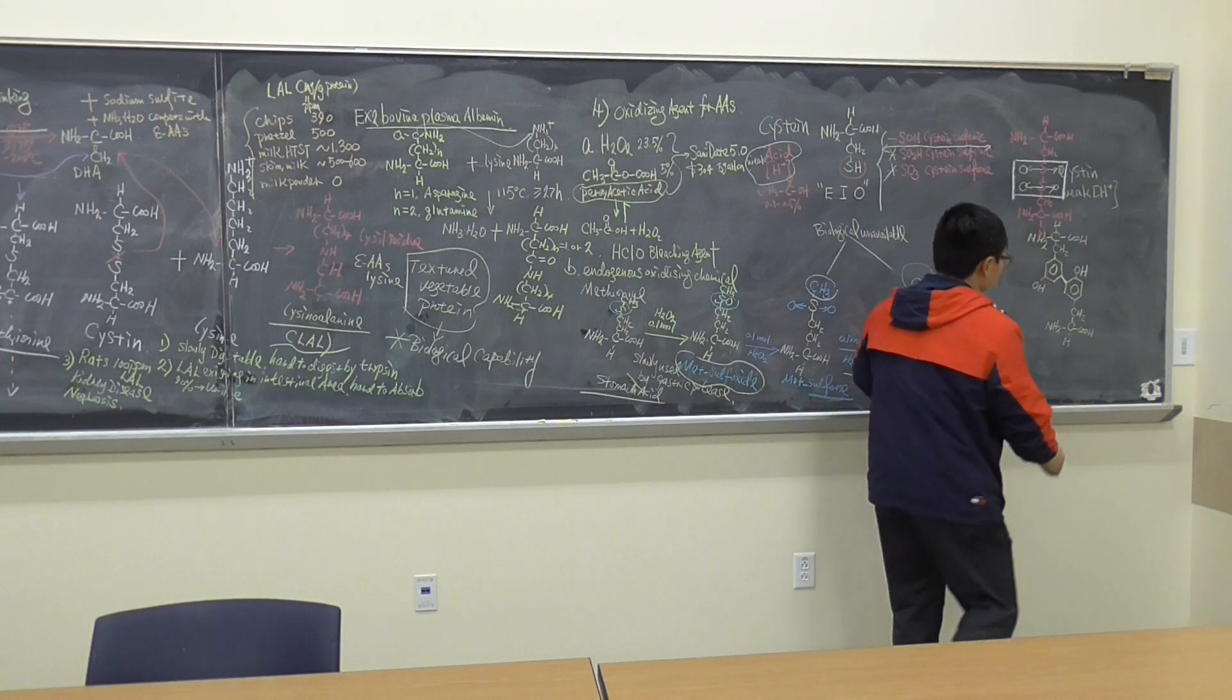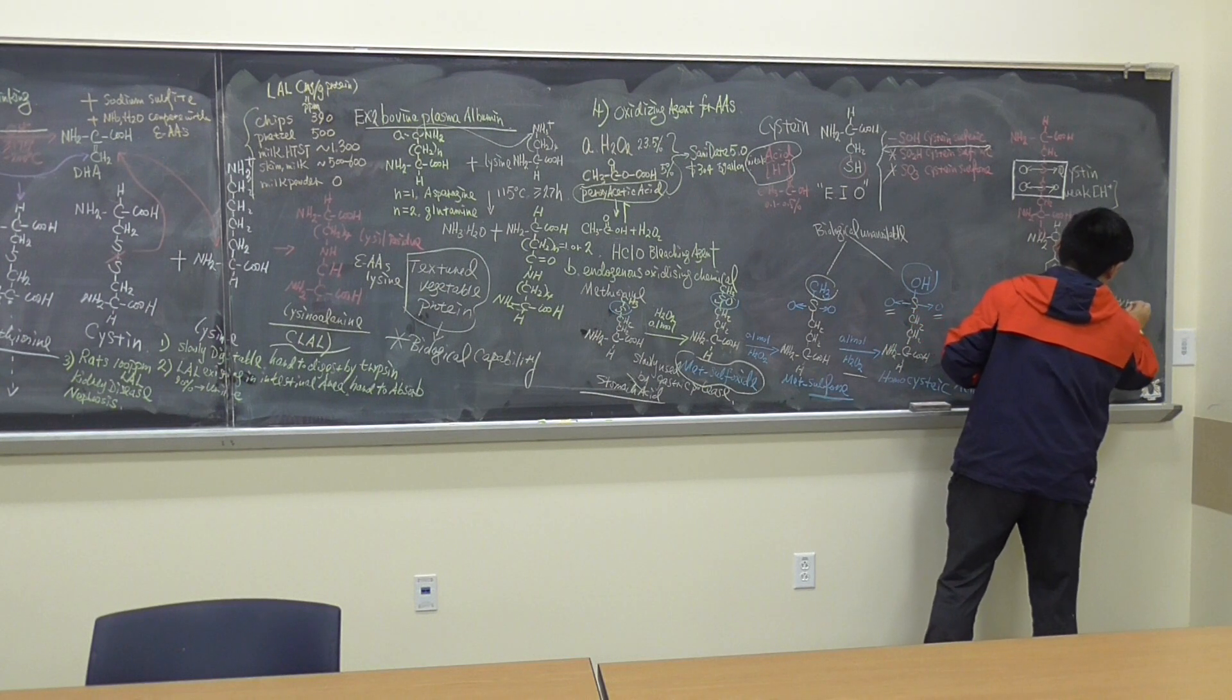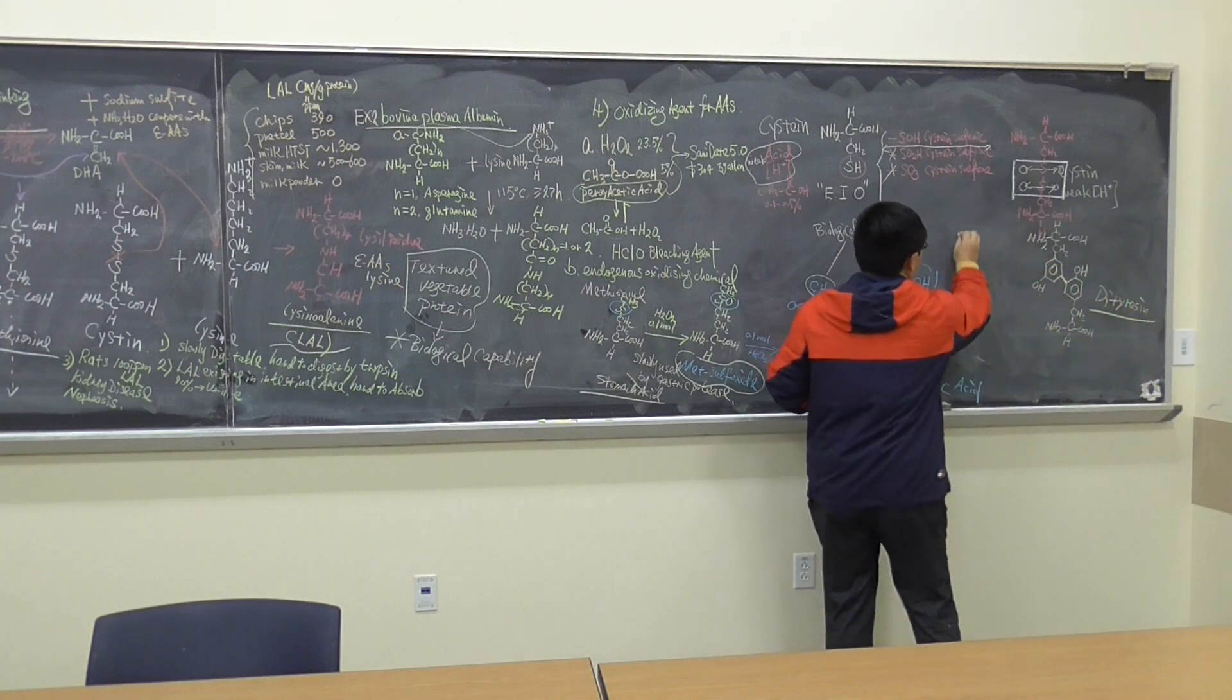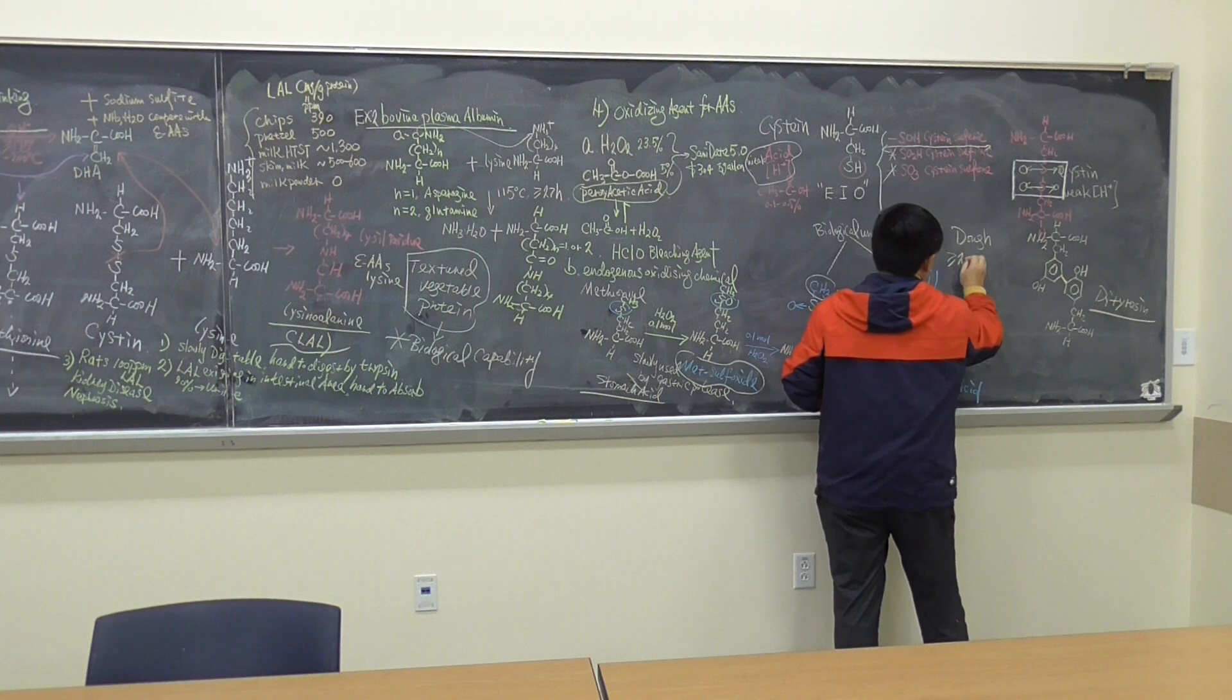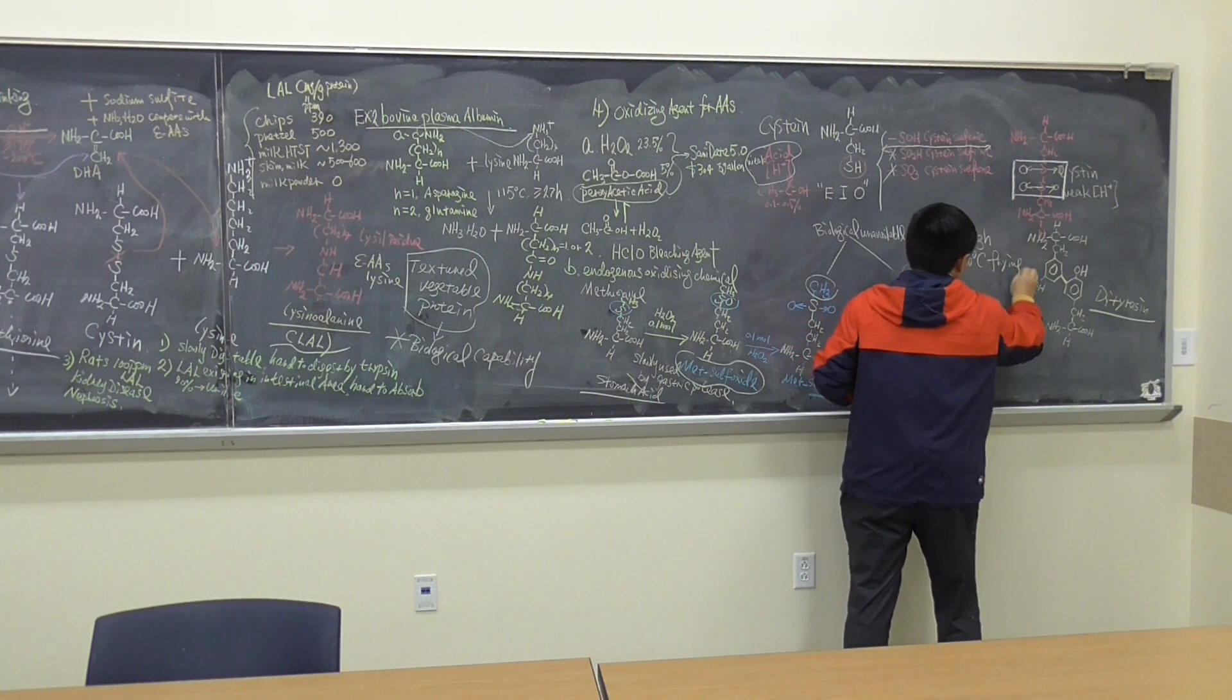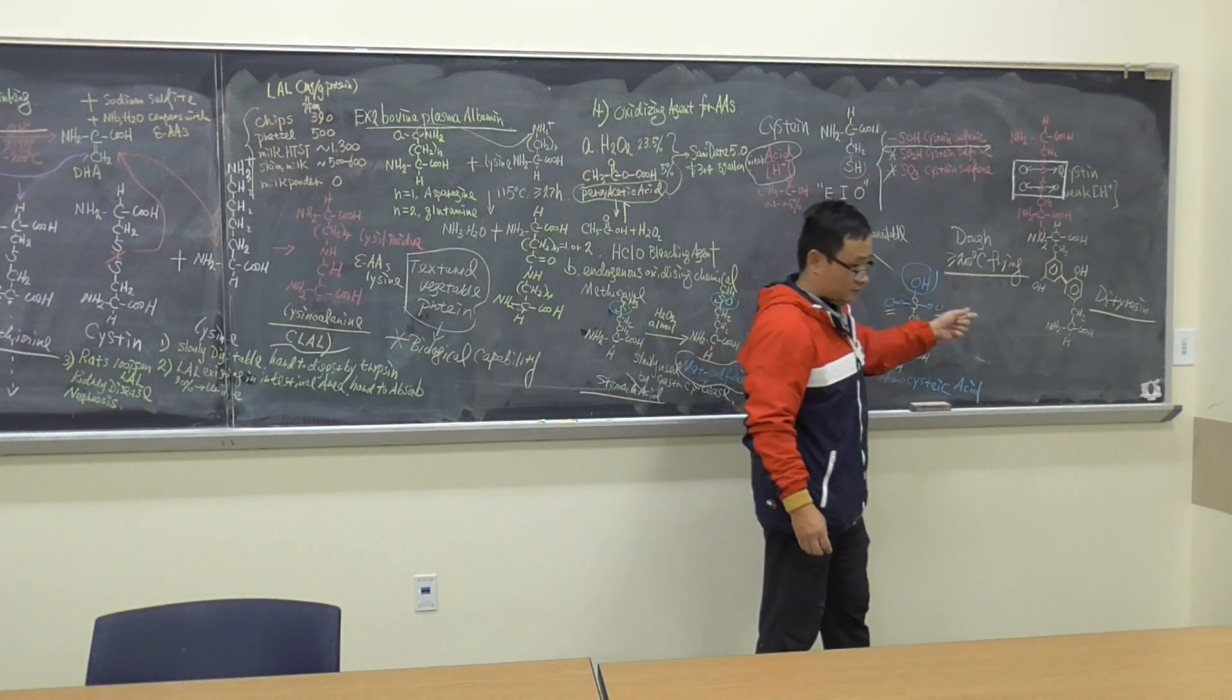What is this guy? This is di-tyrosine. This happened when dough, at more than 200 degrees Celsius, frying will become very elastic.